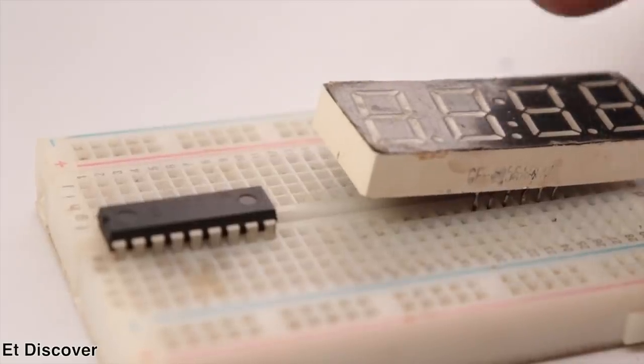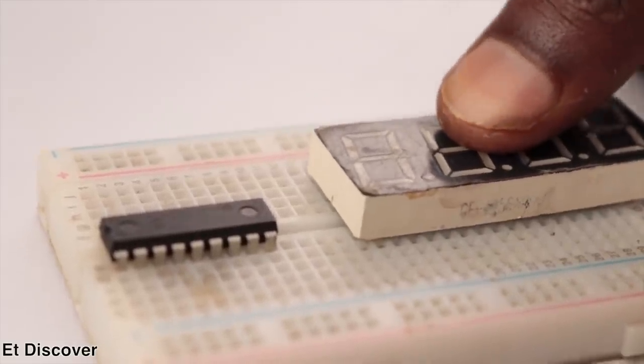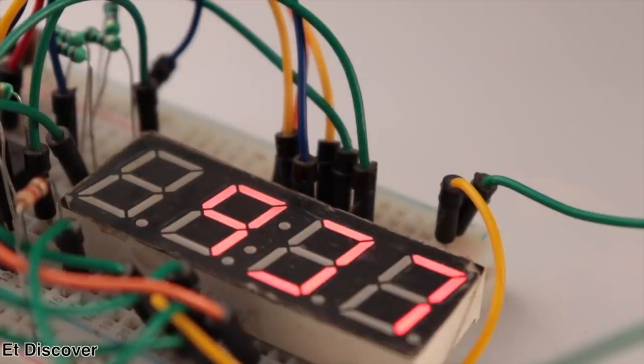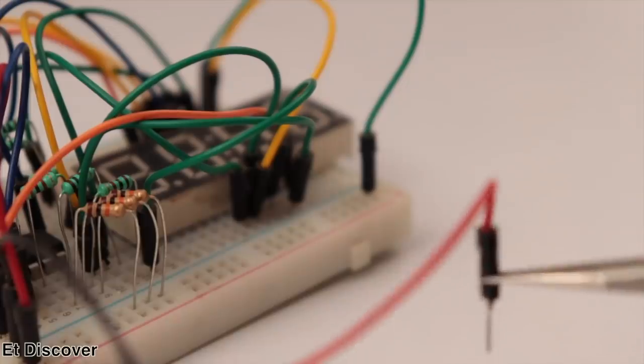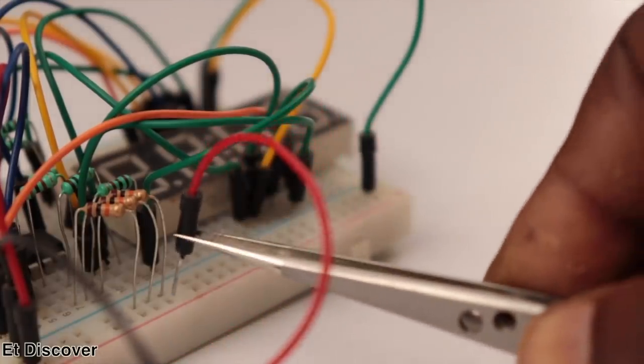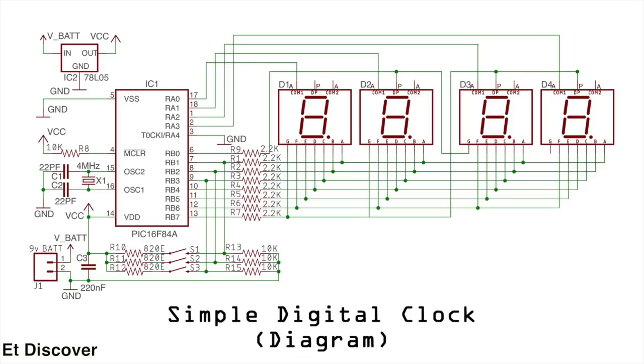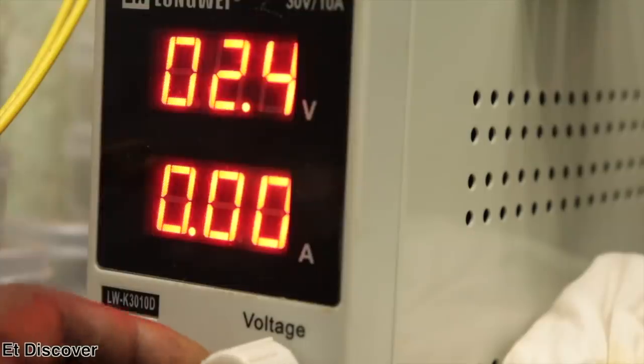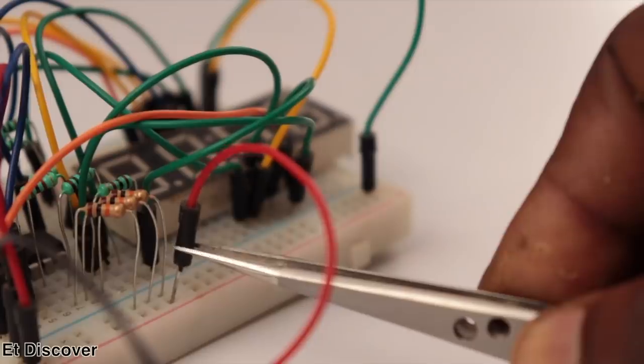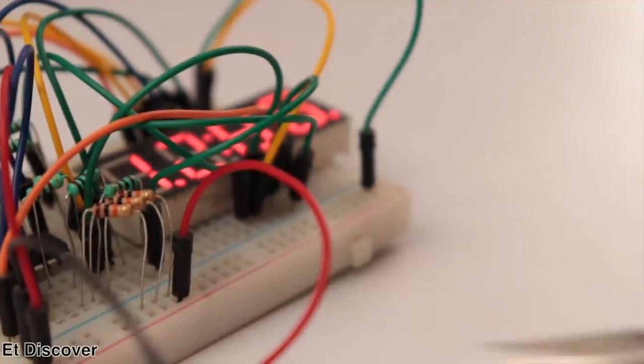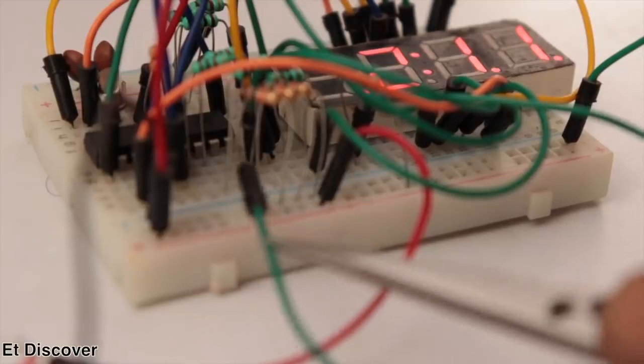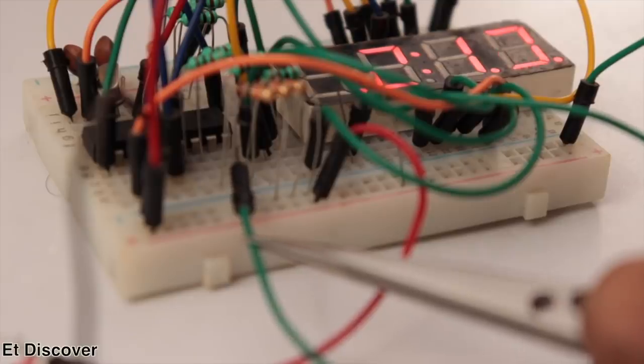I used four 7-segment cathode displays to see the clock digits. In this way, you could better understand this clock. Now time to connect all necessary wires from IC to 7-segment display. I connect a bunch of wires from IC to 7-segment display according to this diagram. After completing this process, I set my power supply to 5V and power up the board. You can see it is working very well, and you can also set your time by pressing these three buttons.